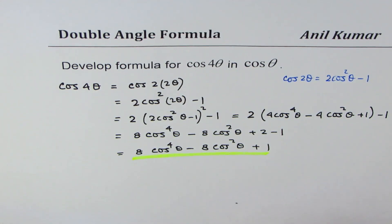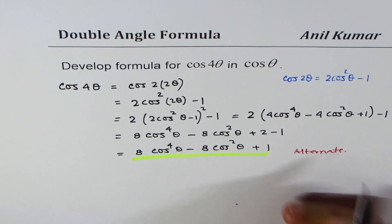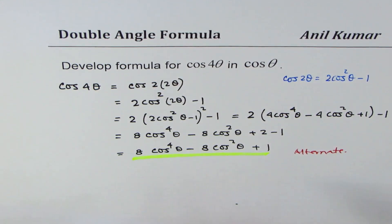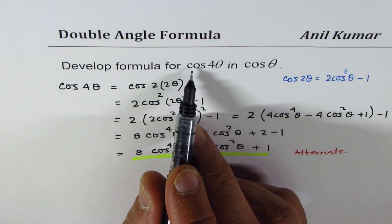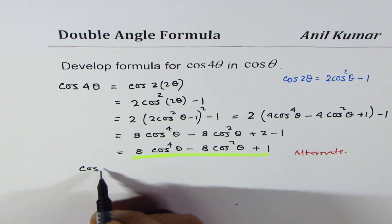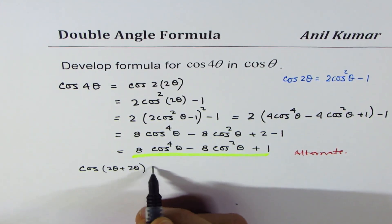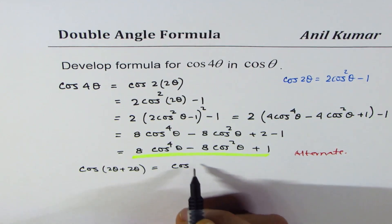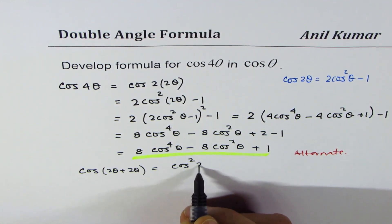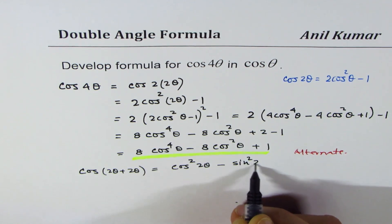There could be an alternate approach also. That could be expanding cos 4θ as cos(2θ + 2θ), which gives us basically cos²(2θ) minus sin²(2θ), right? So that is another approach for you.